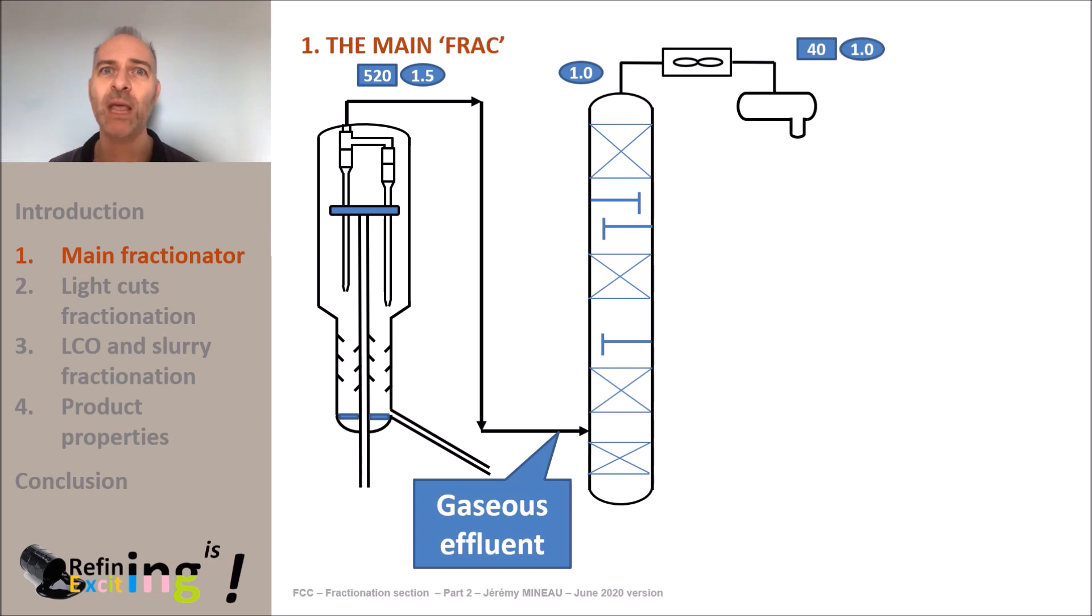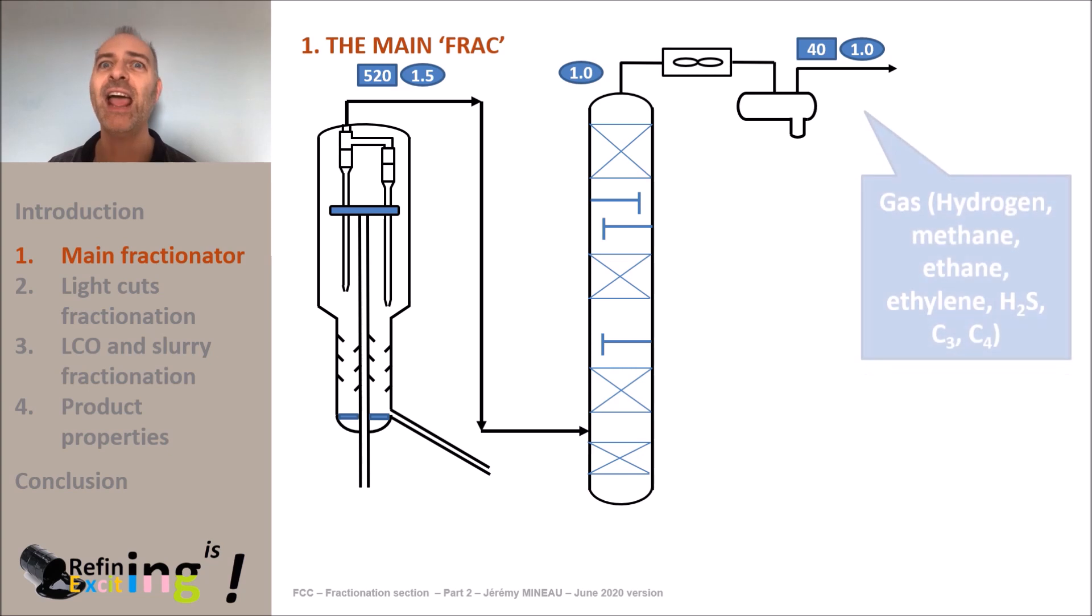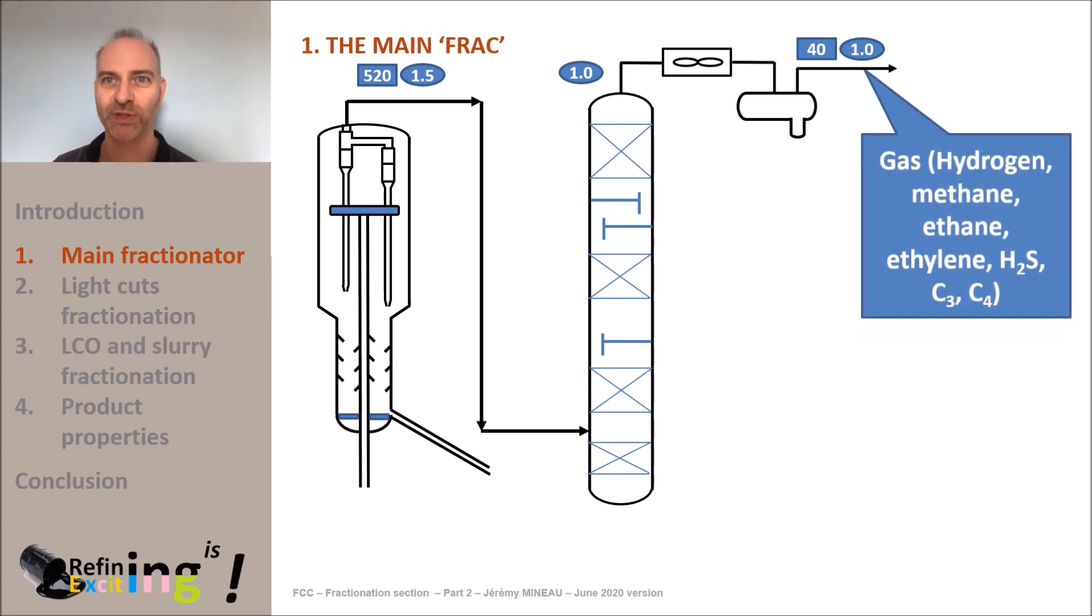In this reflux drum, we will separate the gas that is not able to be condensed at 40 degrees C and one bar above atmospheric pressure. This gas is a mixture of hydrogen, methane, ethane, ethylene and the H2S produced in the reactor, as well as part of the LPG, I mean C3 and C4.